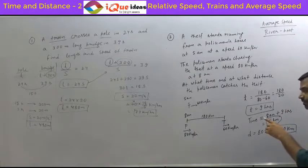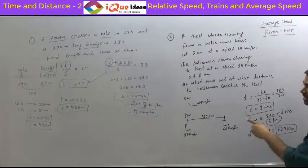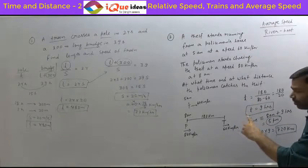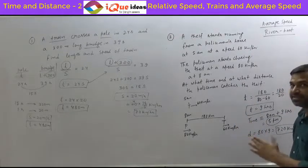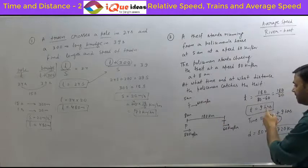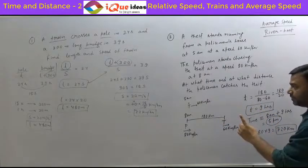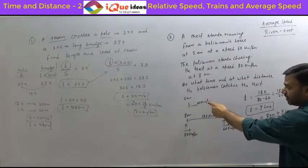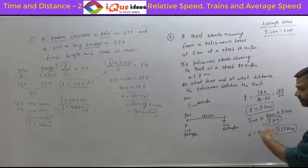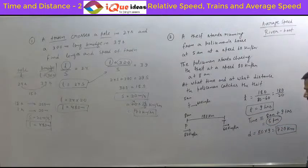You can also verify this using the thief's speed. The thief started at 5 a.m. and was caught at 5 p.m., so the total time the thief has run is 12 hours. Multiplying 12 hours by 60 kilometers per hour gives the same distance. Both the policeman and the thief must have traveled the same total distance to the meeting point, so the answer is confirmed: 720 kilometers.